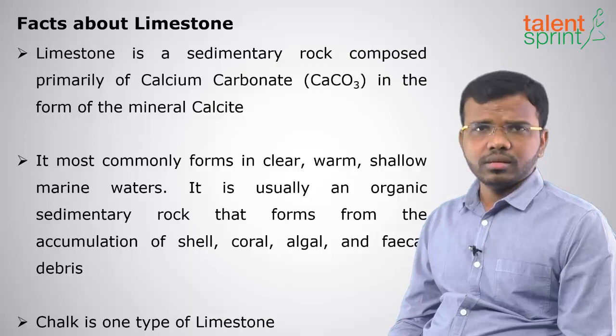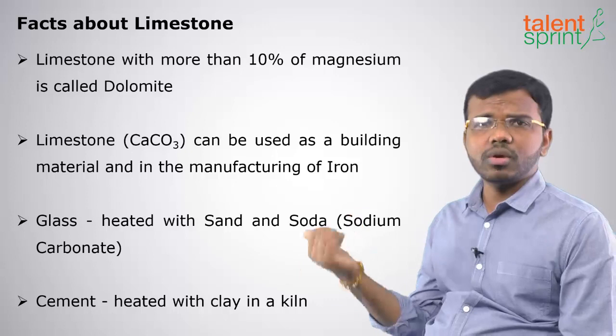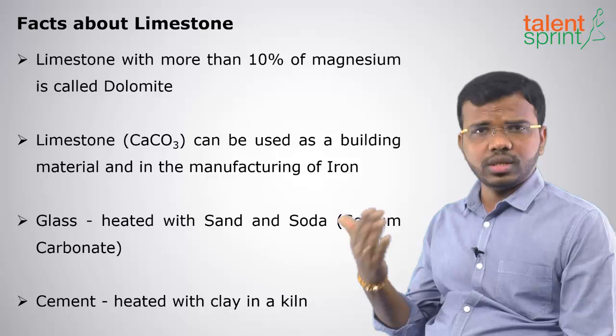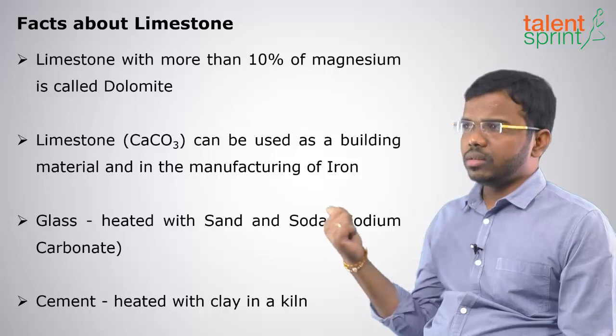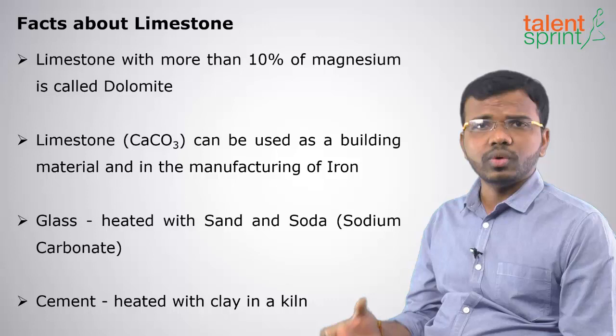When there is 10% or more magnesium in limestone, it is called dolomite. Limestone (calcium carbonate) is also used in building materials and manufacturing of iron, glass, cement, etc. In making glass, it is heated with sand and soda (sodium carbonate). In cement, it is heated with clay to get the actual cement.